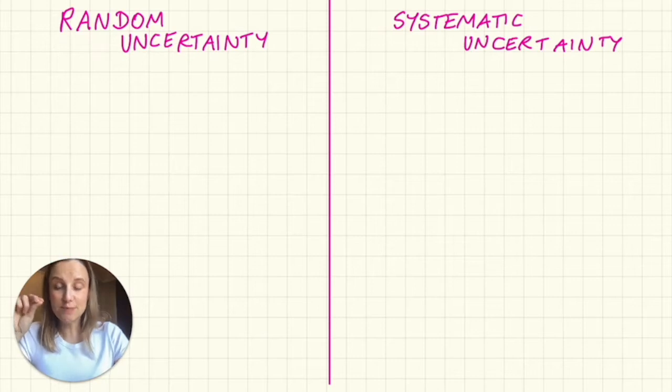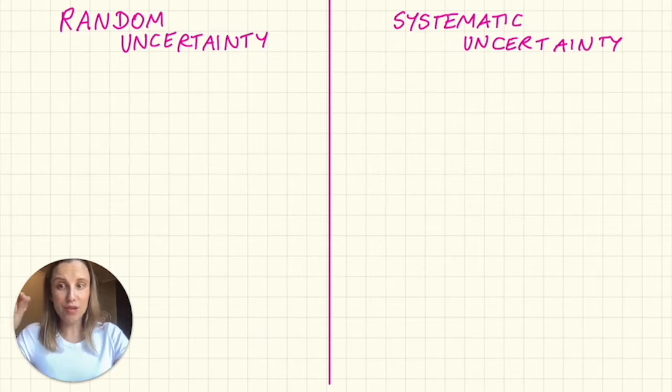Okay, let's talk about the difference between random uncertainties and systematic uncertainties because this is something that people get wrong all the time.